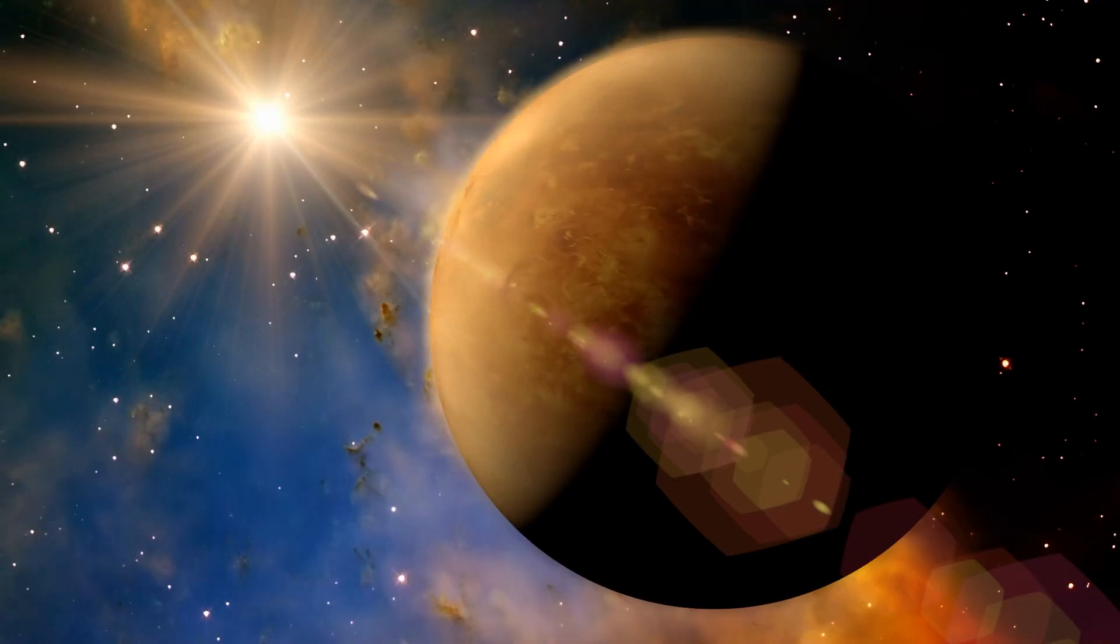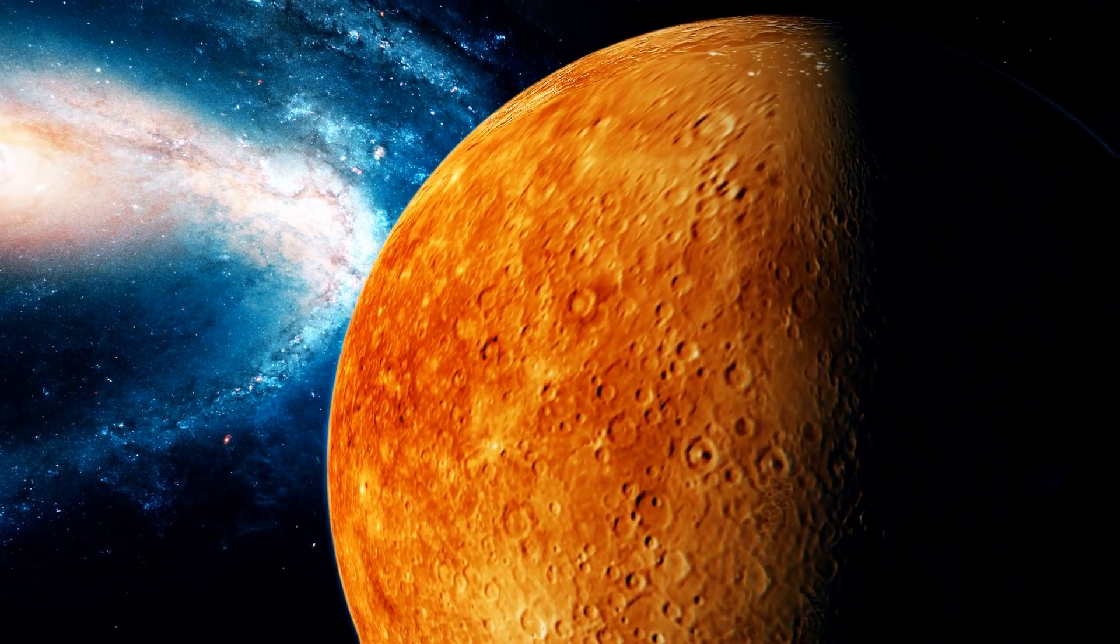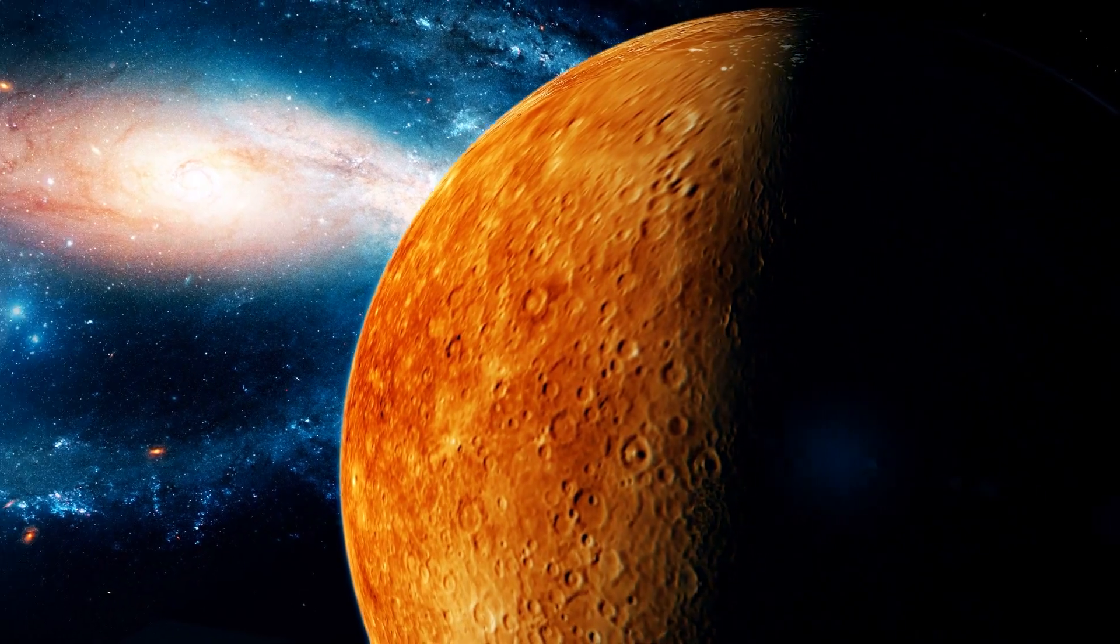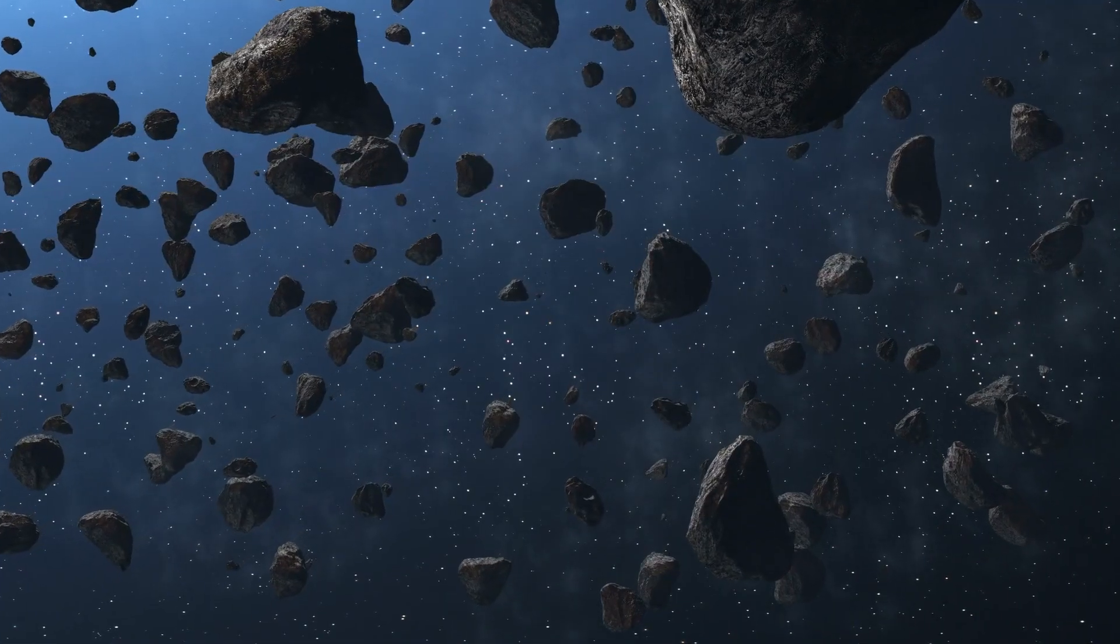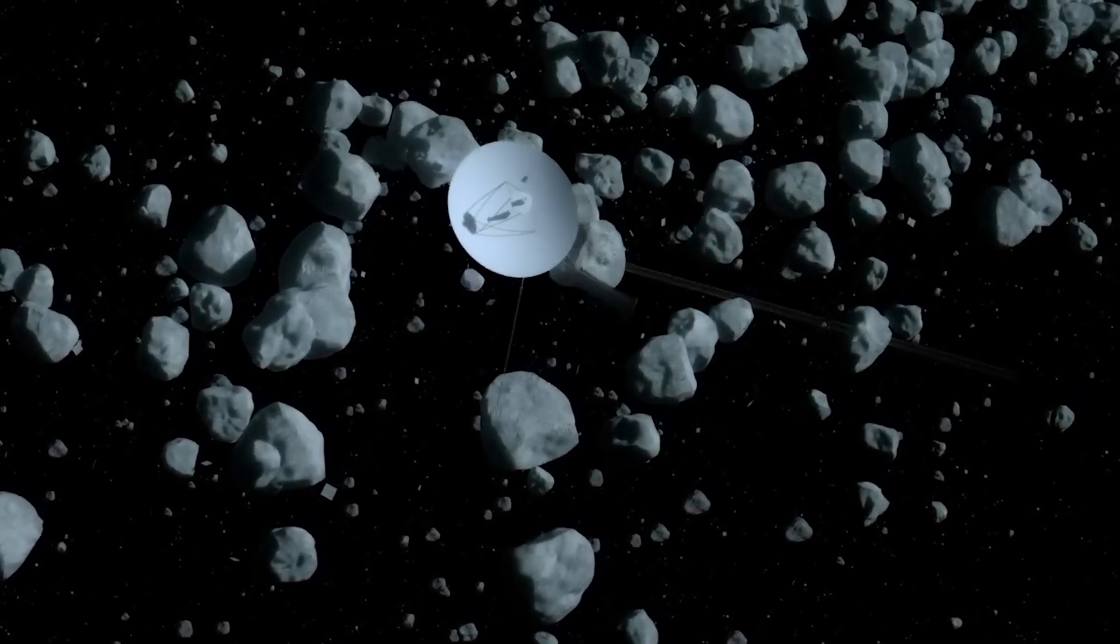The epic voyage of the Voyagers began with a gravity boost from Venus, a maneuver that had never been attempted by spacecraft heading towards Mercury, making them true pioneers. However, they had to navigate through the perilous asteroid belt, a subject of much debate and speculation beforehand.